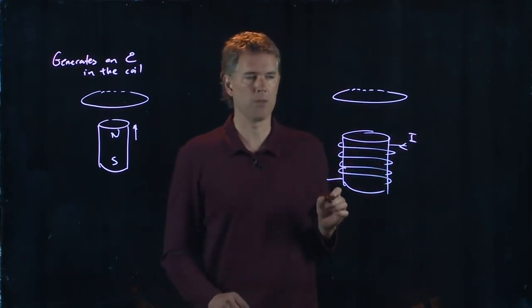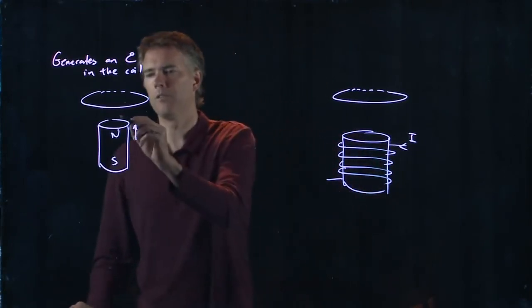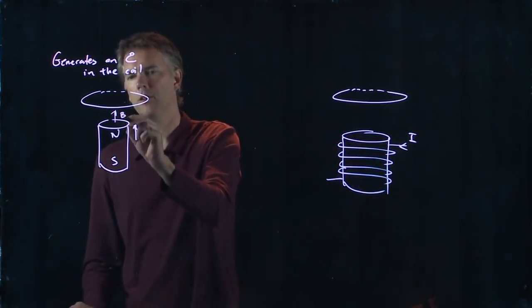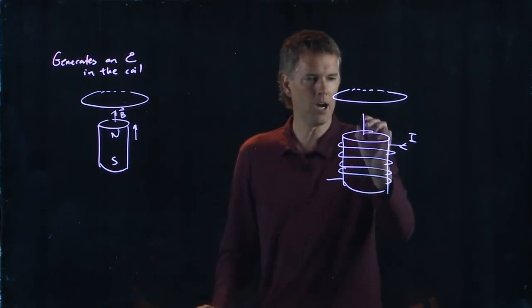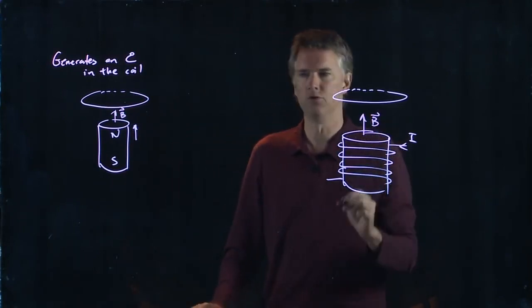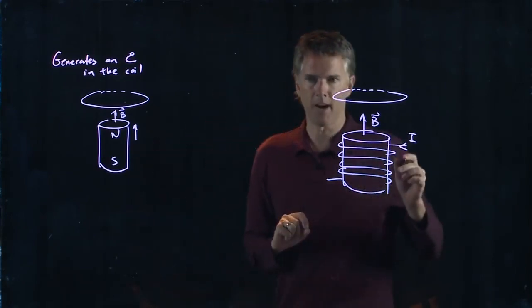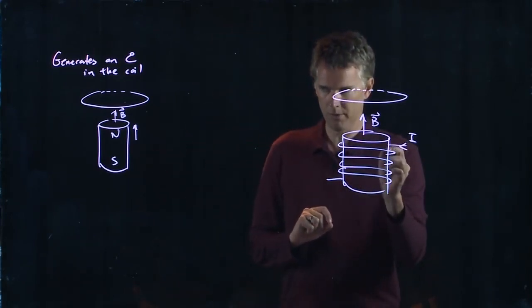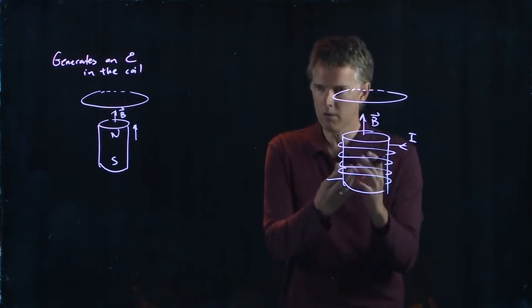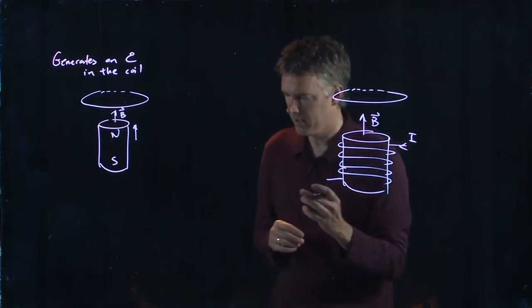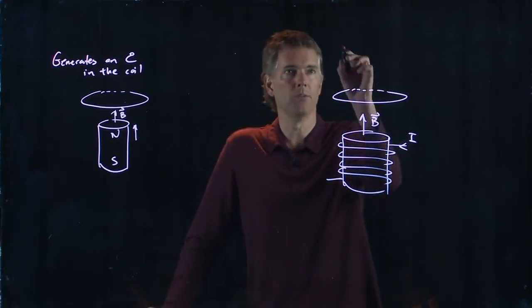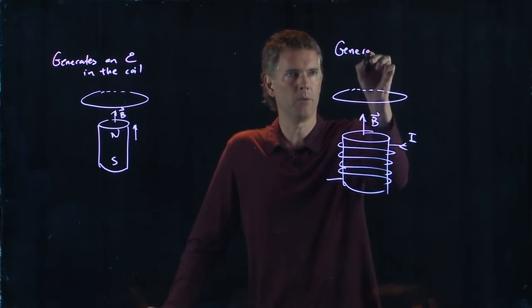If I run current I through that solenoid I know what it's going to do. It's pointing up just like the B field was pointing up over there. And if I increase the current going through this thing I'm going to increase the strength of the B field and that is also going to generate an EMF in the coil.